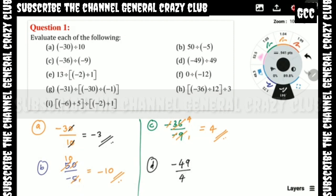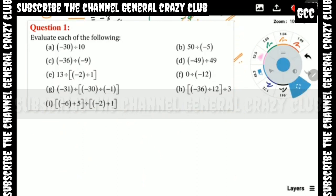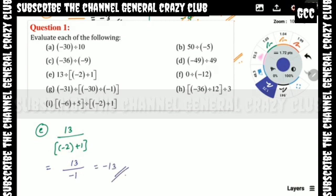Part D: minus 49 divided by plus 49. Minus divided by plus gives minus, so the answer is minus 1. Part E: 13 divided by (minus 2 plus 1), which is 13 divided by minus 1, equal to minus 13.